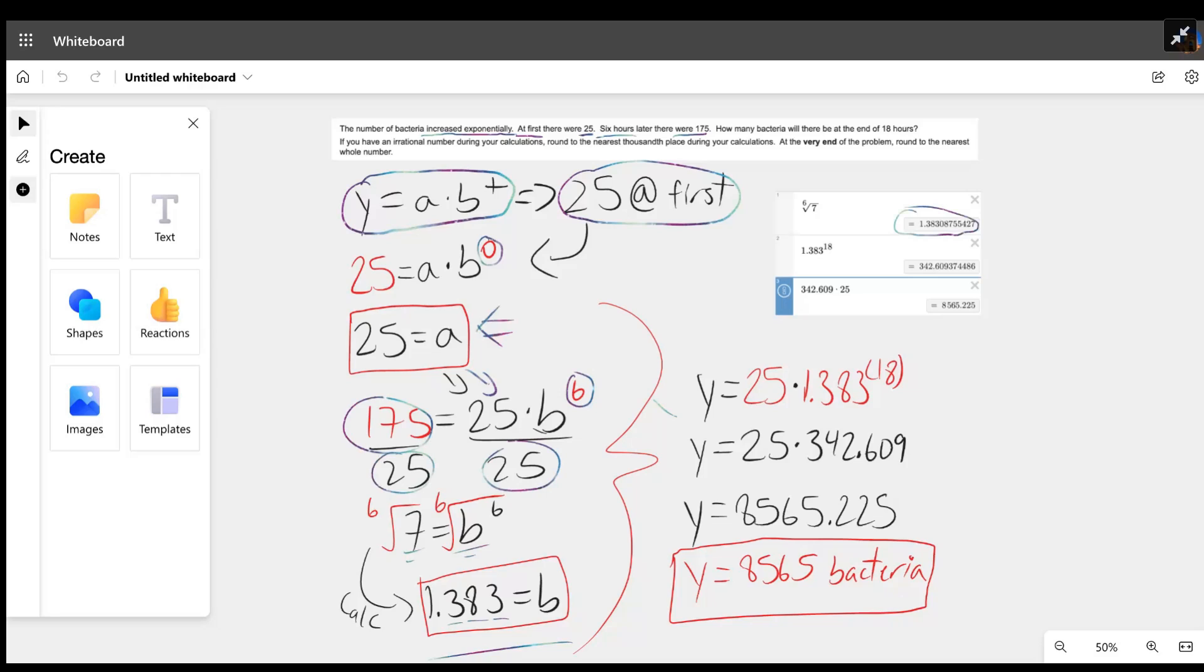Moving on, we can bring everything into full circle now. Y equals a times b to the power of t. We have the value of a right here, which is 25, and 1.383 is the value of b.